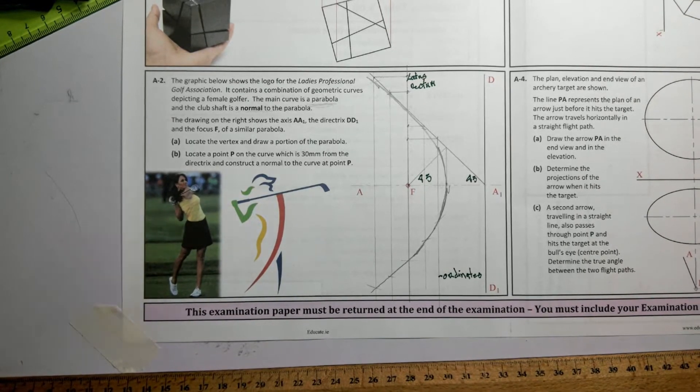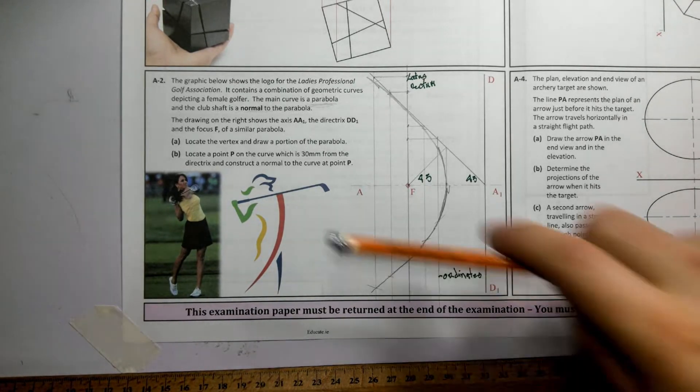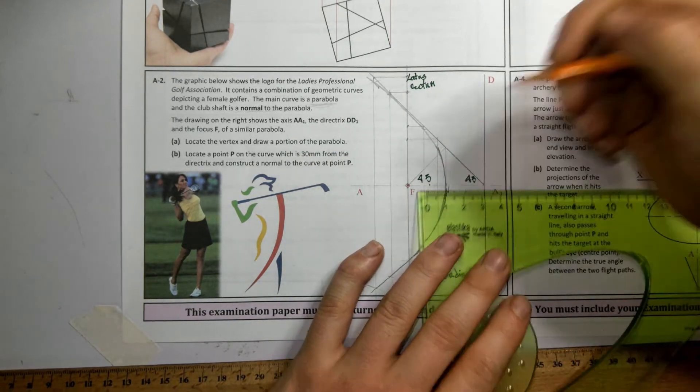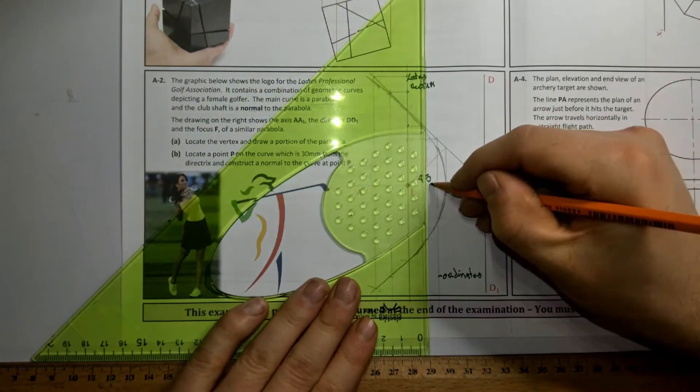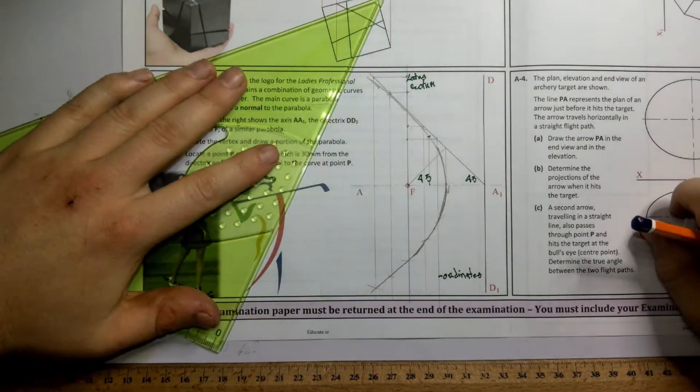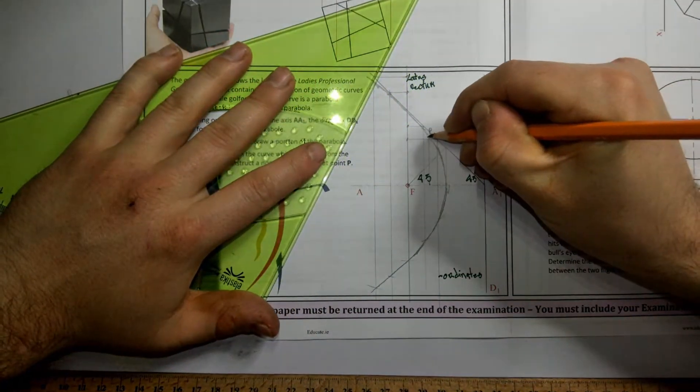Now, locate a point P on the curve which is 30 mil from the directrix and draw in a tangent. I'm going to mark 30 mil from the directrix. I'm going to go straight up. Here's the point here. I'm just going to label that point P.